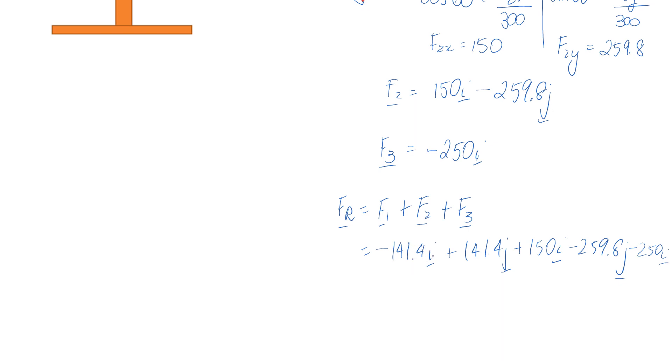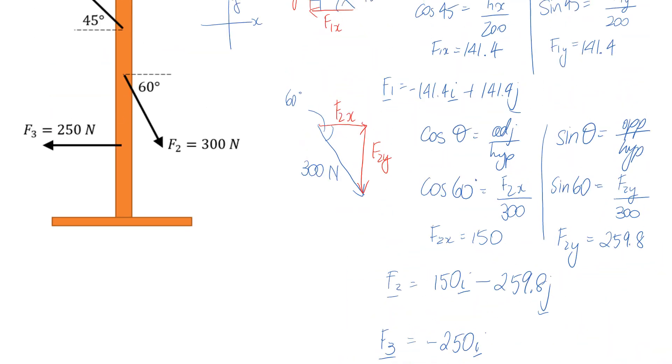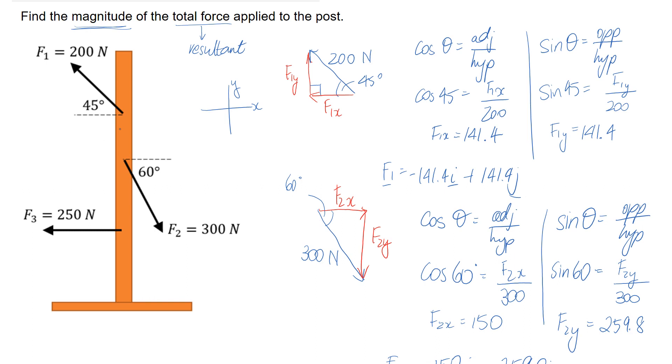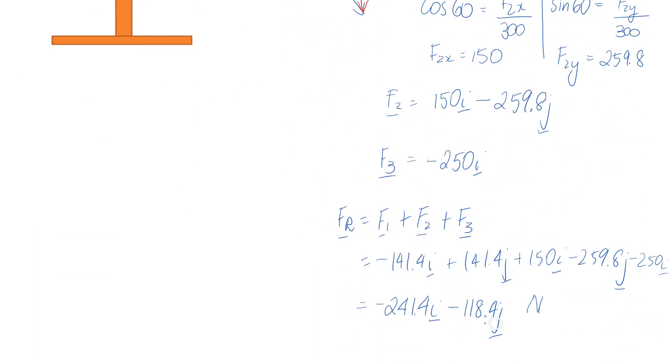So we should be able to now combine the i components together. Putting together these three terms, it comes to negative 241.4. And putting the two j parts together that we have, it comes to negative 118.4. So this here has the units of newtons. That's our resultant force from adding all three of these together. This is what the total can be expressed as in terms of a horizontal and a vertical part.